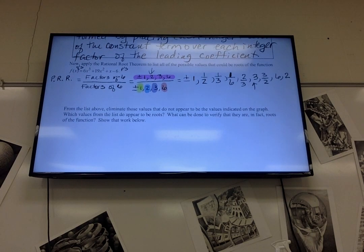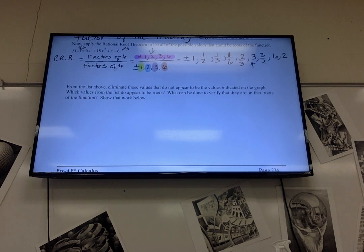Okay, so this is what we just did. What can we do to verify that they are in fact roots of the function? So the ones that we think are the actual real rational roots, we have negative 3, negative 2 thirds, and we decided 1 half was a little closer.